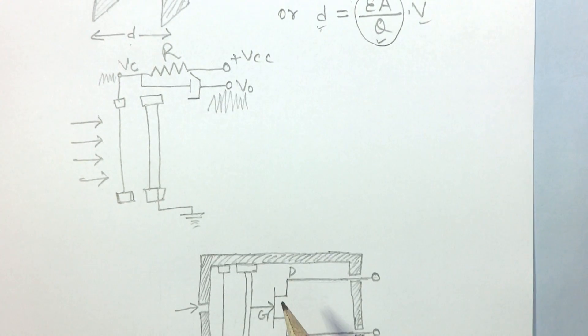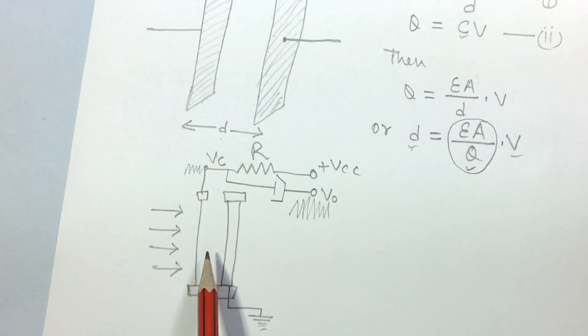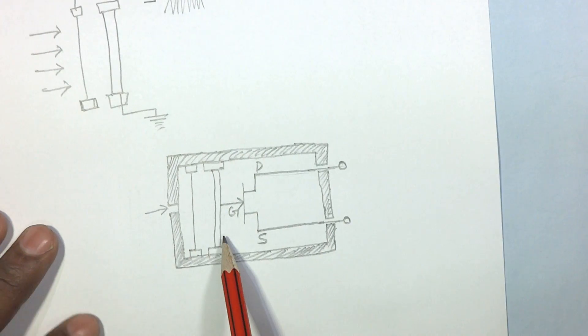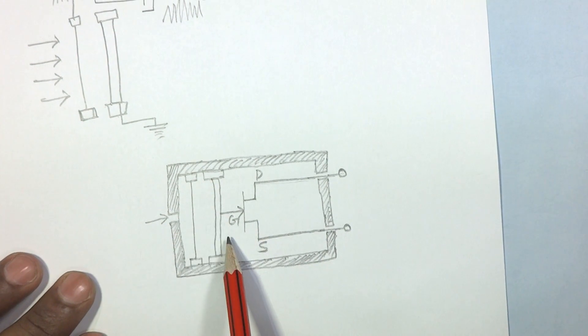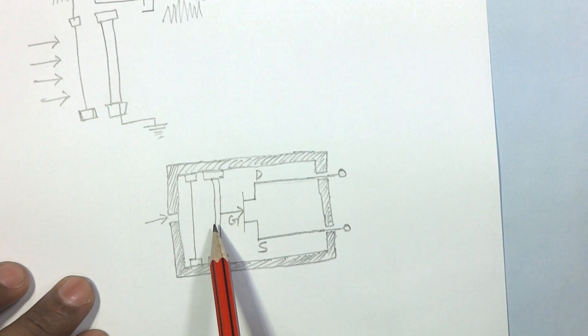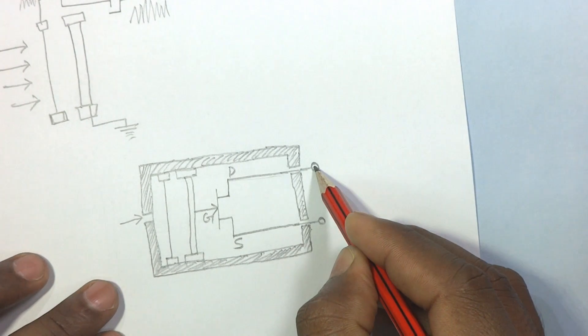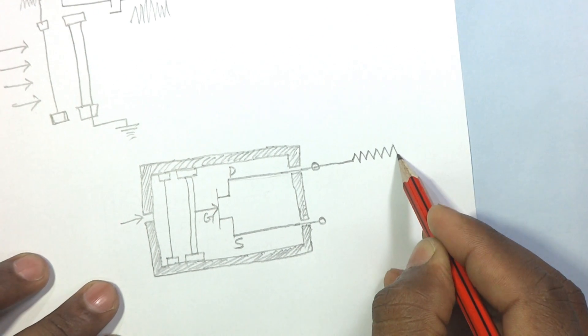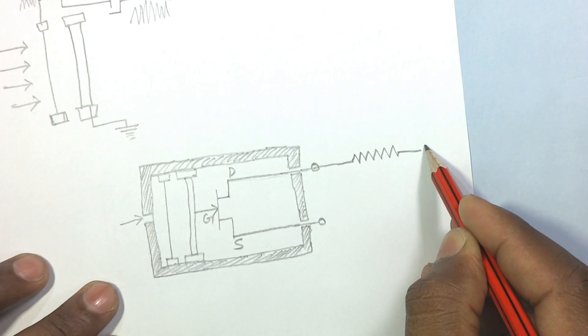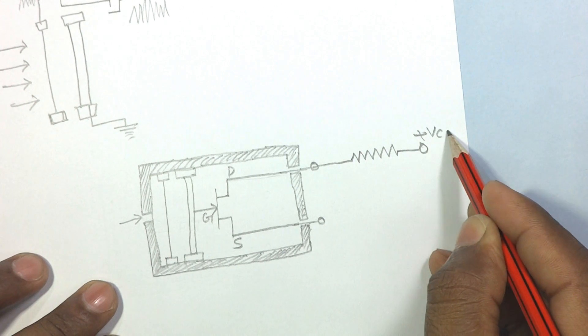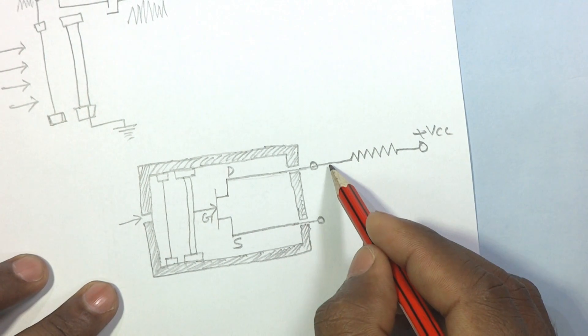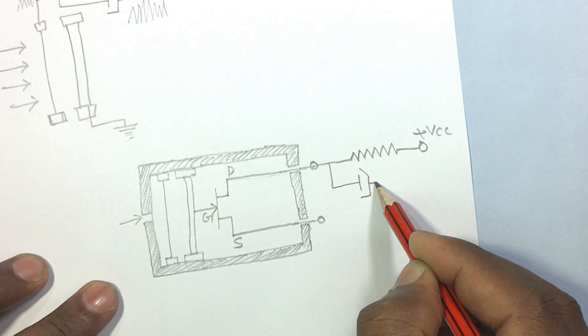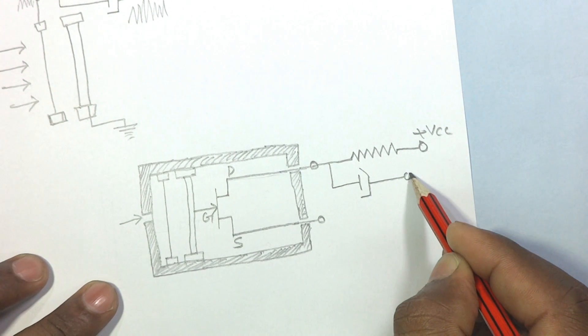There is only one difference between these two microphones. This microphone requires external power source, but the electret microphone does not require any external power supply. We connect the drain to the supply voltage through a resistor R and a coupling capacitor which blocks the DC component from output.